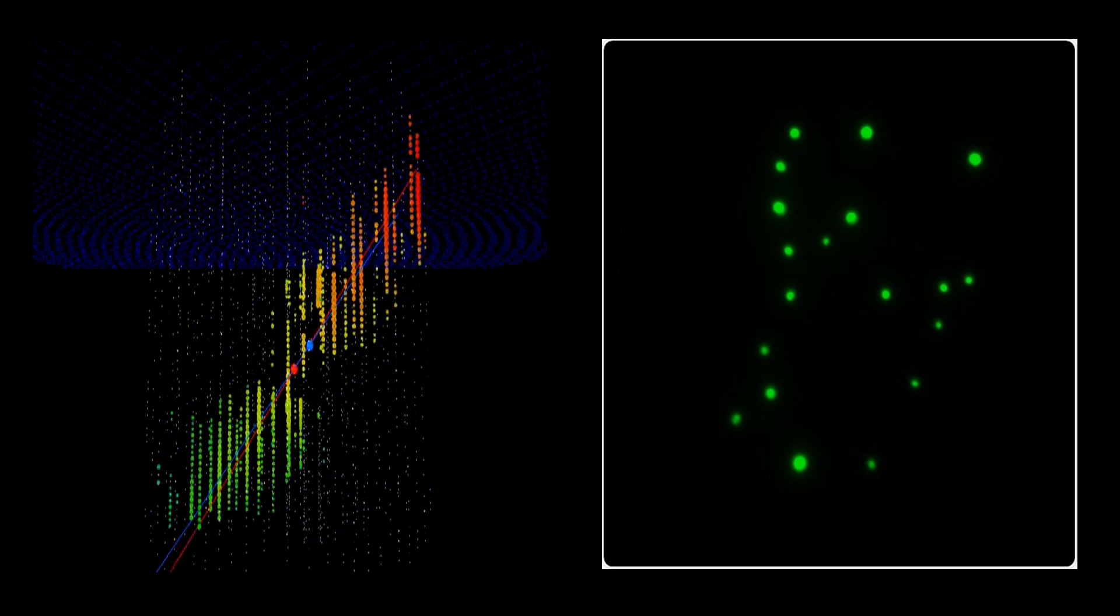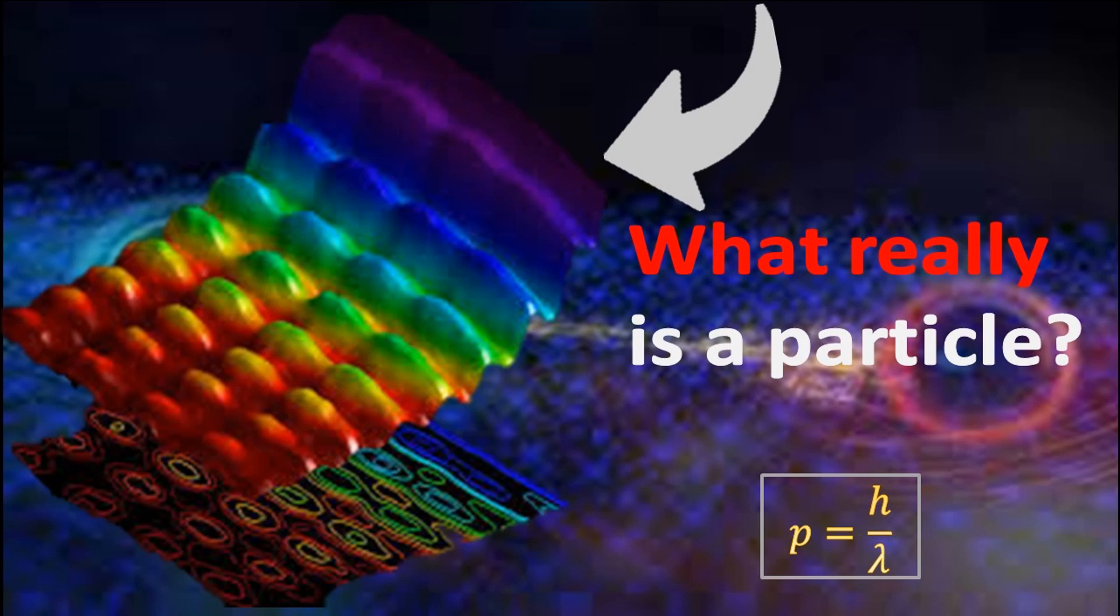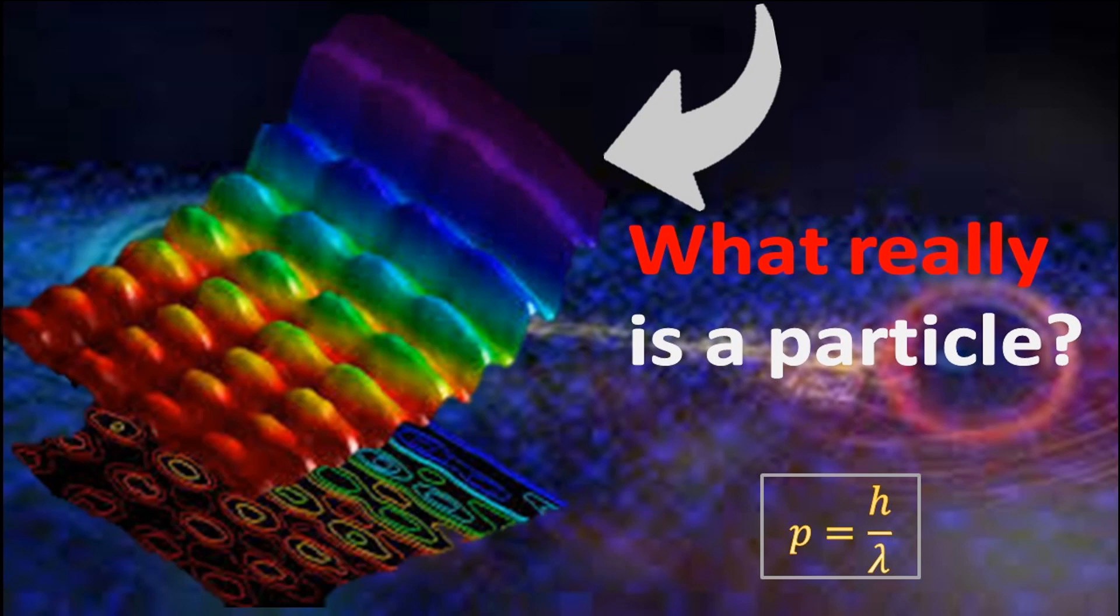We established in the last video, titled What is a particle?, that a wave is the apparent movement of particles of a medium, and these particles, therefore, carry kinetic energy, which can be detected and measured by a detector placed in the path of the wave.